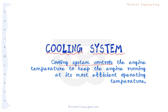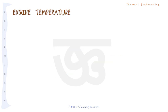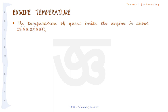The cooling system controls the engine temperature to keep the engine running at its most efficient operating temperature. Although the temperature of the hot gases is very high, that temperature is not good for the engine parts - it should run at an optimum temperature. The temperature of the gases inside the engine is nearly 2300 to 2500 degrees centigrade.